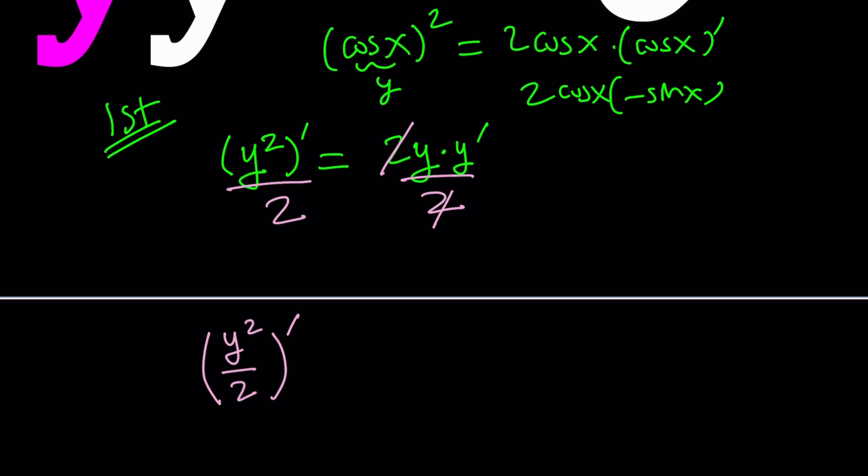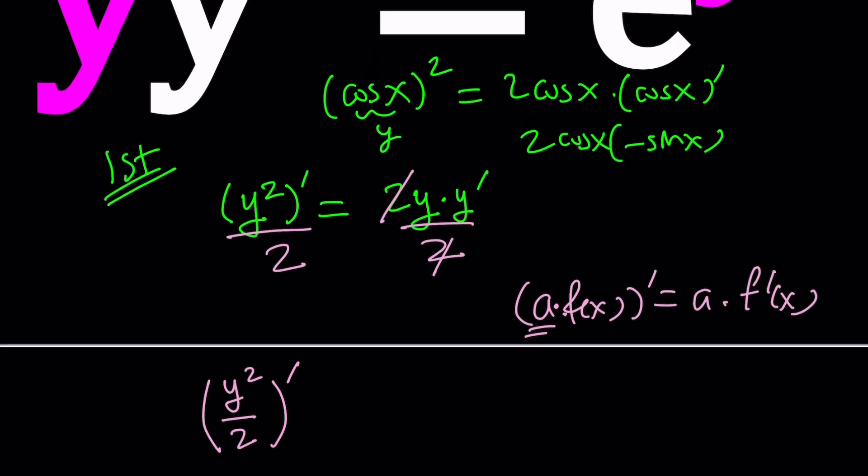In other words, if you have something like a times f of x and differentiate this, you get a times the derivative of f. Make sense? Okay, so the constant stays like that. You can also use the product rule, but that's just longer. So I got this on the left-hand side, which is nice because it's the derivative of something.